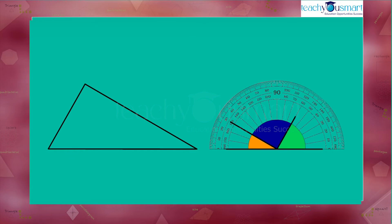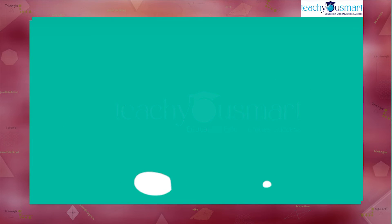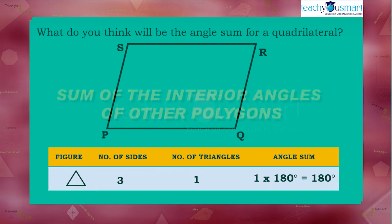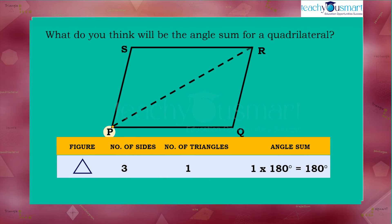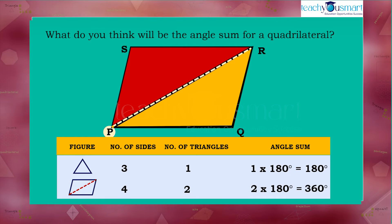We learned earlier that the sum of the measures of interior angles of a triangle is 180 degrees. Now let's find the sum of the interior angles of other polygons. Consider the quadrilateral, which gets divided into two triangles by a diagonal. Therefore, the sum of the angles of a quadrilateral equals the sum of the angles of those two triangles, which is twice 180 degrees — that is 360 degrees.